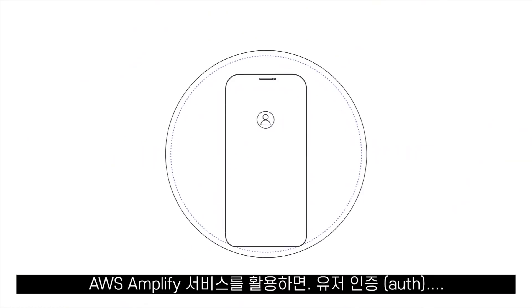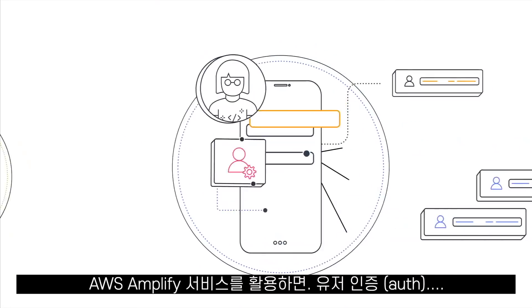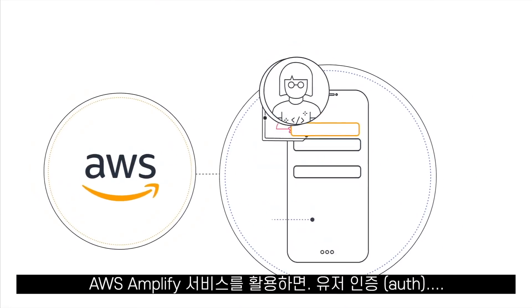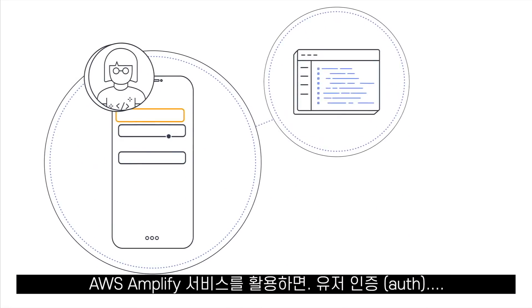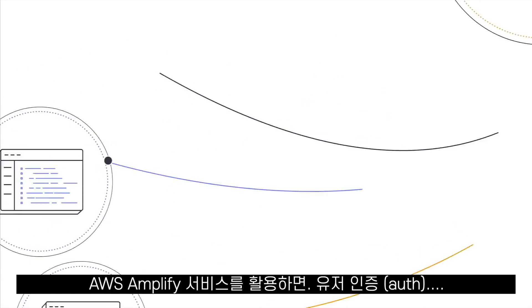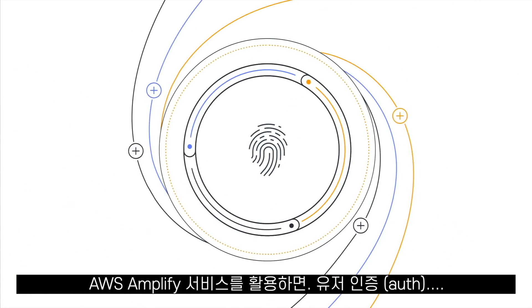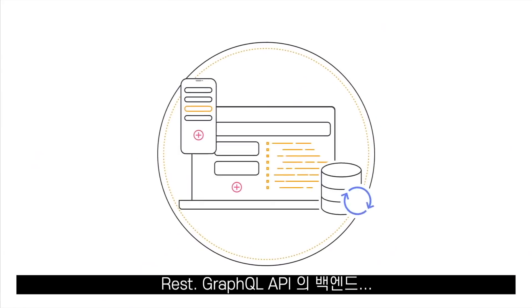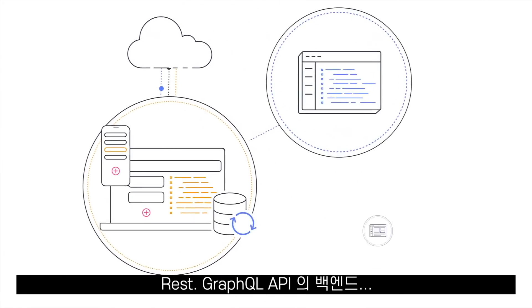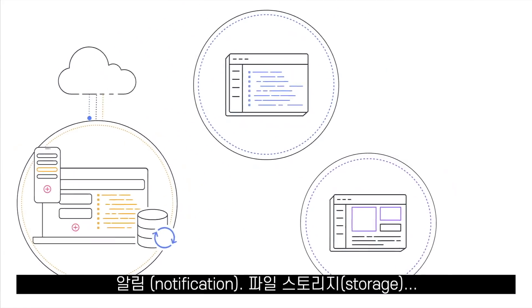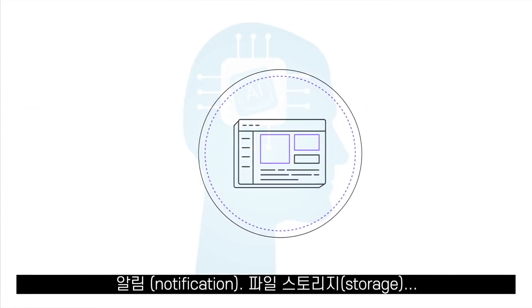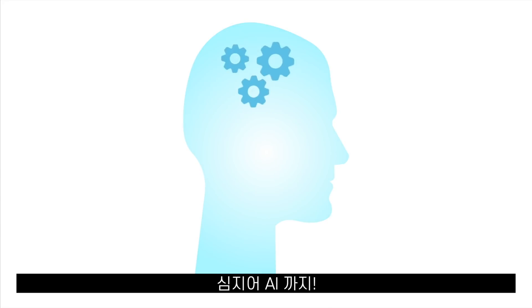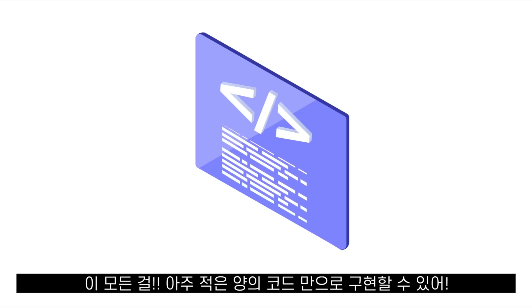AWS Amplify is a set of tools and features that we can use to generate applications with user authentication, backends with REST and GraphQL APIs, notifications, file storage, and even AI — all by writing a very minimal amount of code.